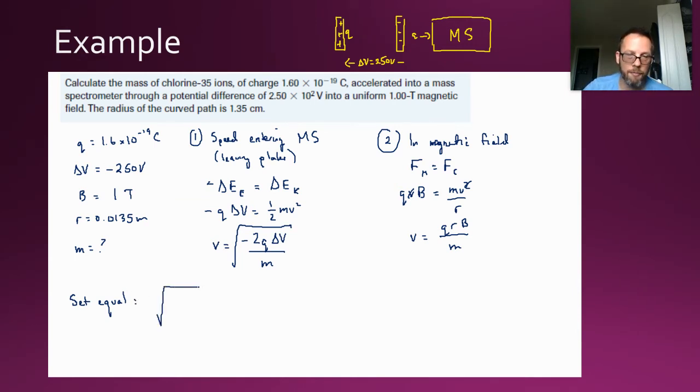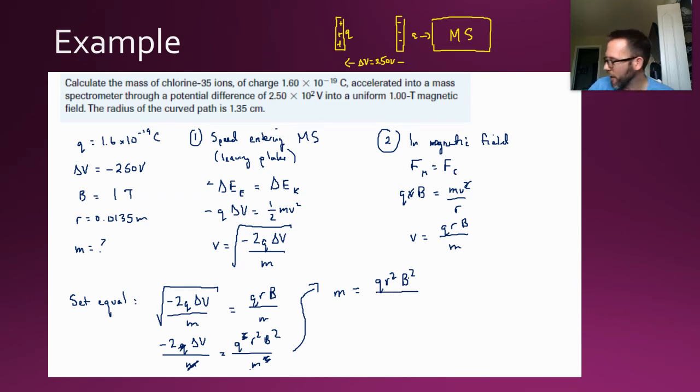All right, so we have the root of negative 2Q delta V over m equals QRB over m. So what I'm going to do is I'm going to square both sides. So negative 2Q delta V over m equals Q squared, R squared, B squared over m squared. And we add a factor, one factor of m divides out. So if I multiply this m up to the left and divide by the Q down to the right and do some cancelling, so you notice I have a factor of Q on both sides, that can divide out. So I get this expression for m. So m equals Q R squared B squared divided by negative 2 delta V.